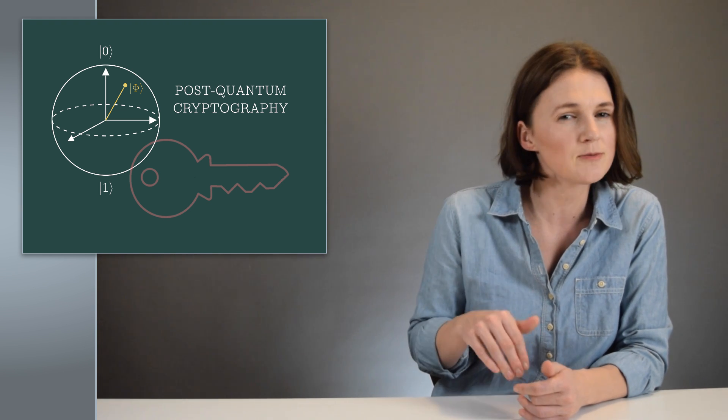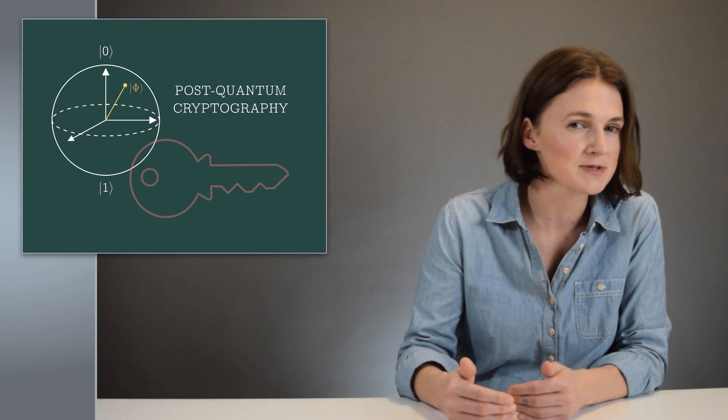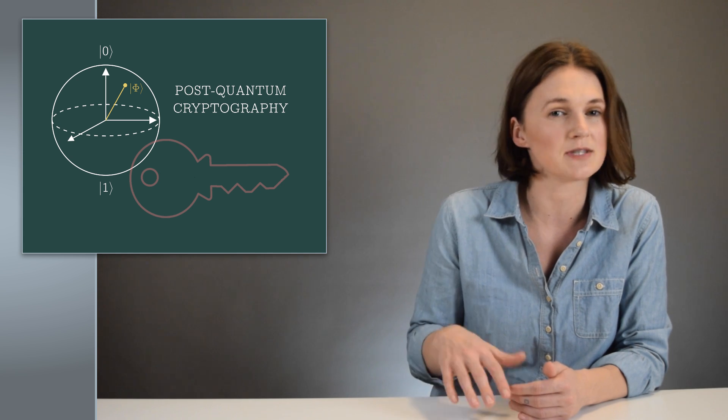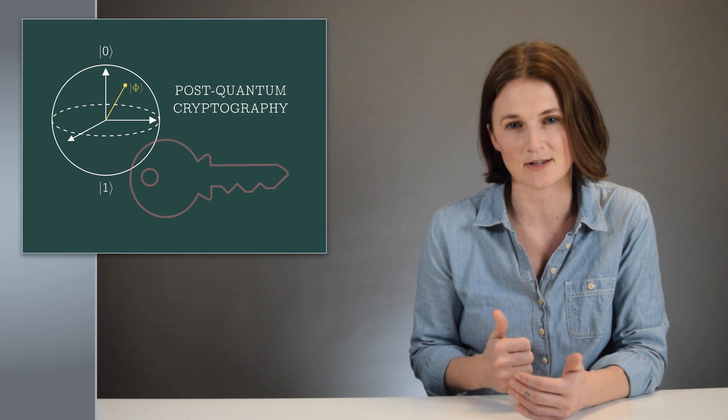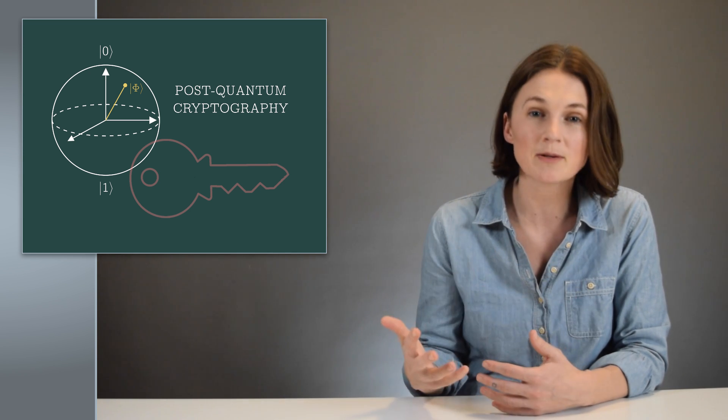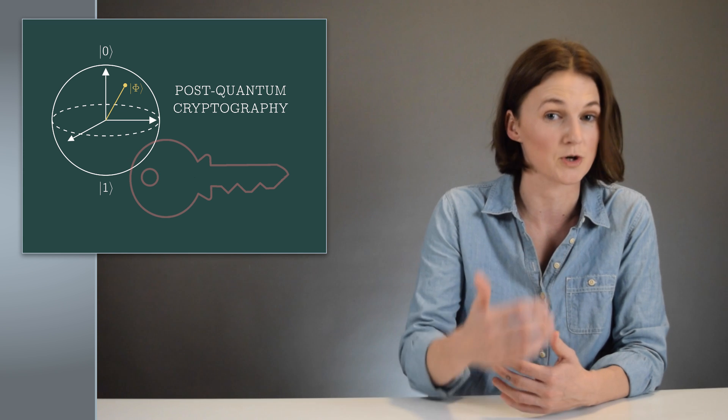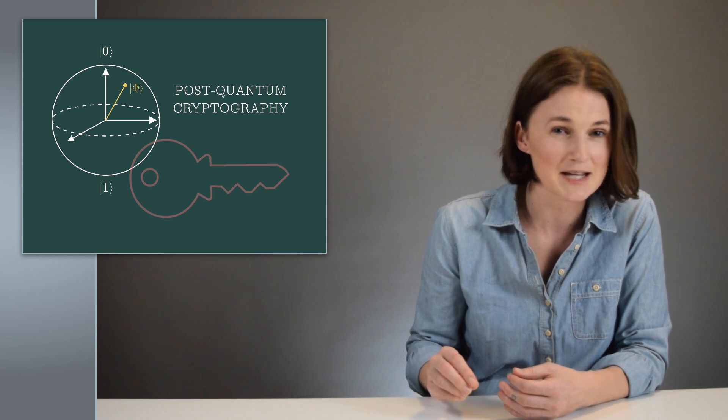For one reason, it could be possible to store encrypted messages now and then decrypt them later with a quantum computer. Let's say two people use Diffie-Hellman to create a shared secret key and use that key to kick off a secure chat. If the public parts of the Diffie-Hellman key exchange and the encrypted messages were stored, then a future quantum computer could recreate the entire thing.